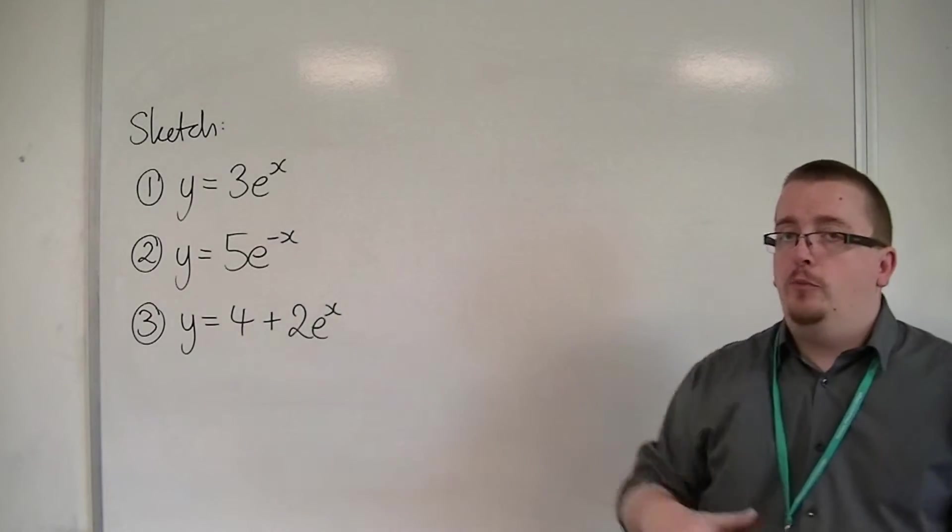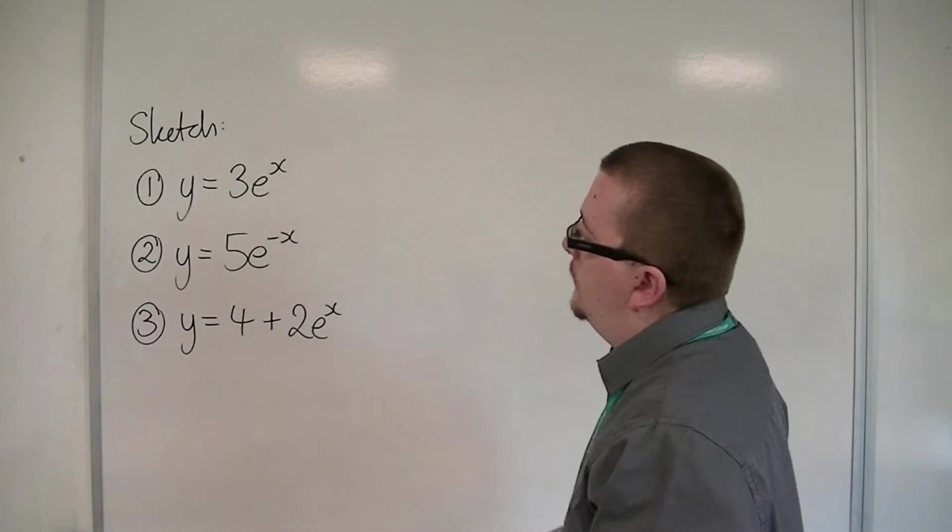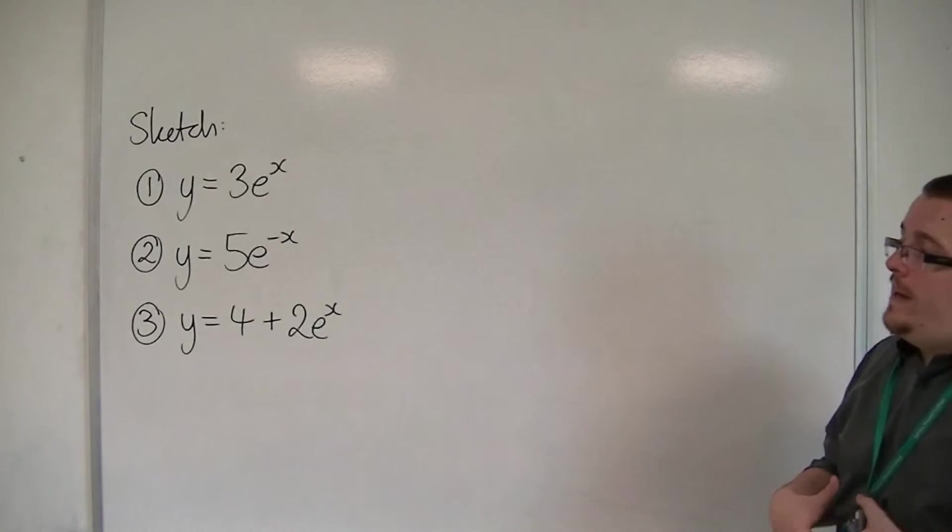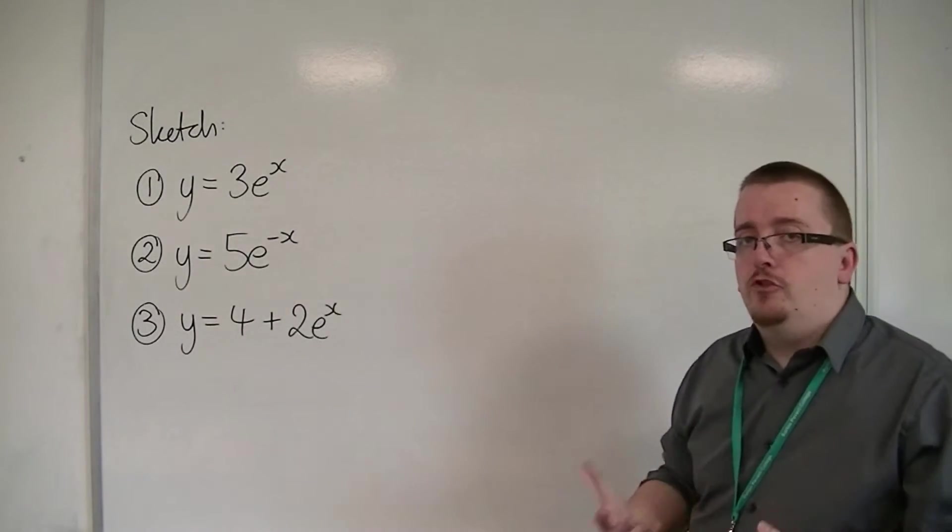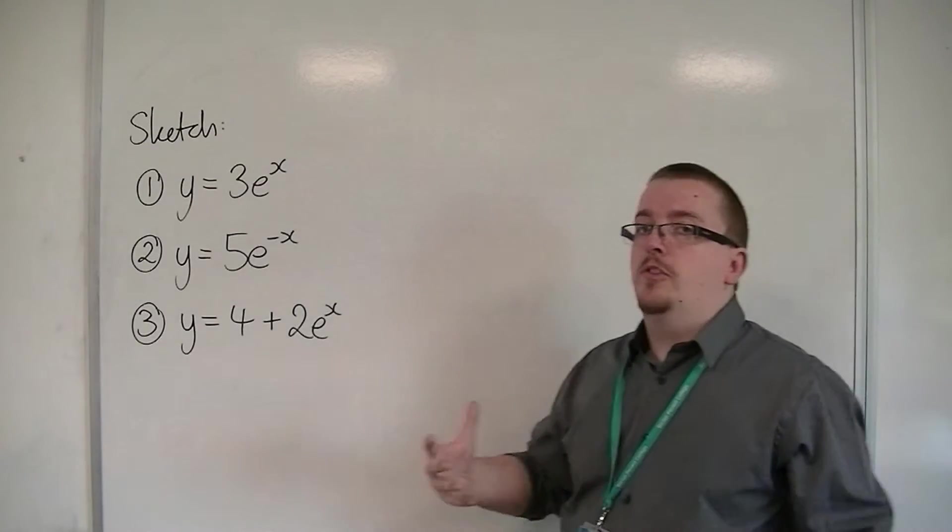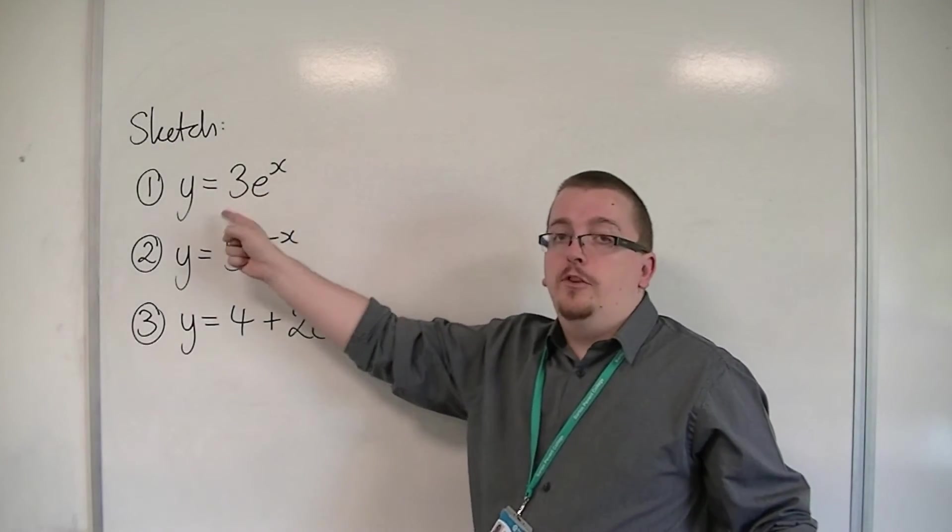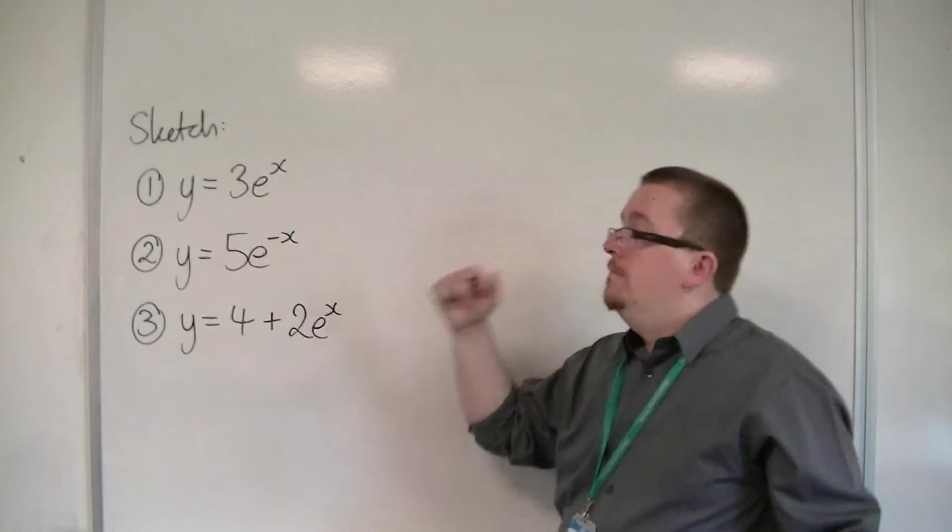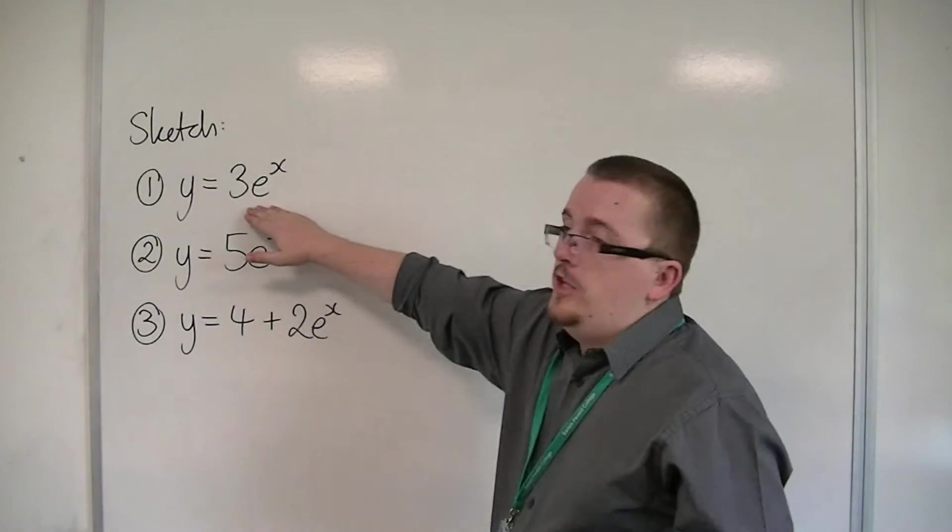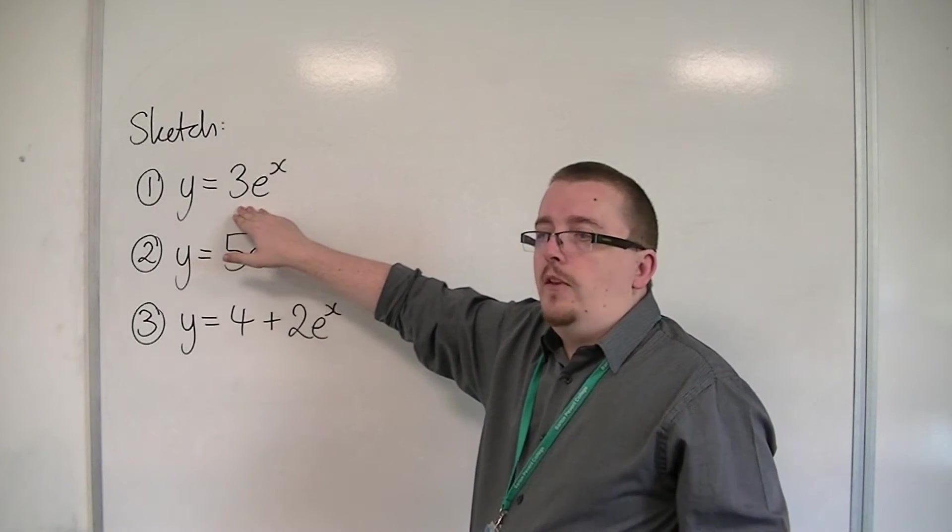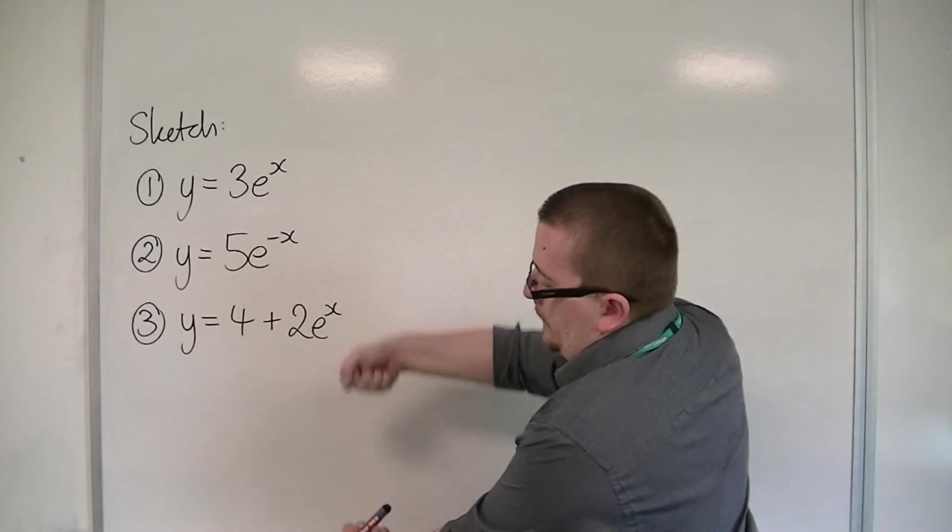Let's look at the first one, y = 3e^x. The easiest way to do this is to consider graph transformations. What does that number 3 in front of e^x do? Well, it's stretching the curve in the y-direction, parallel to the y-axis. So it's stretching it upwards.